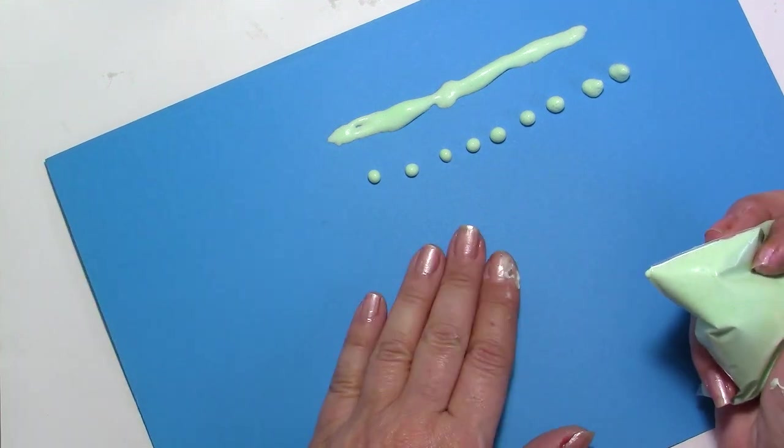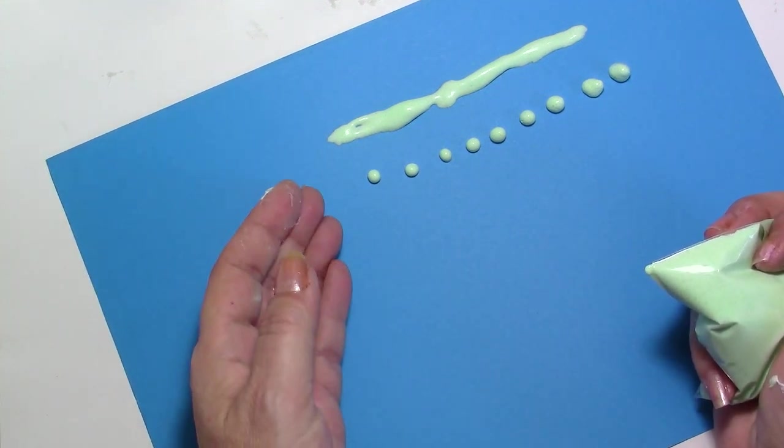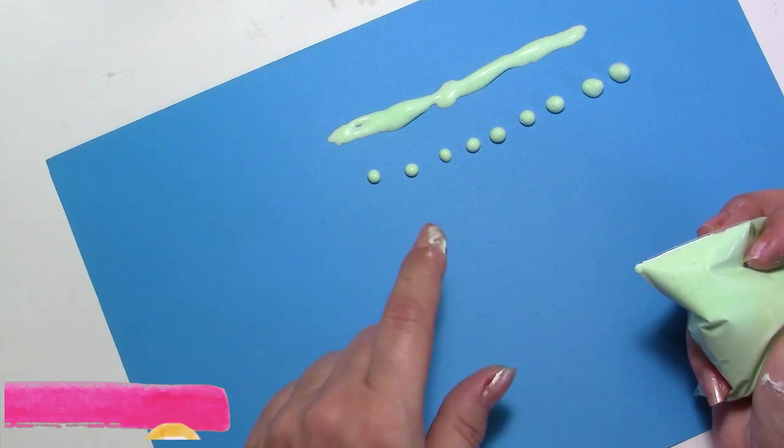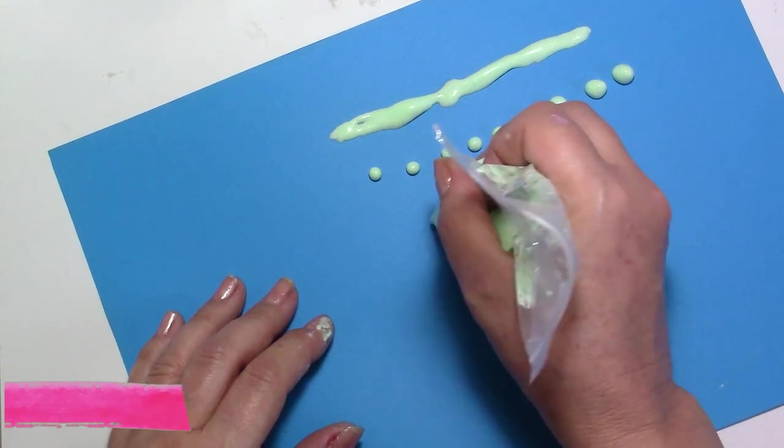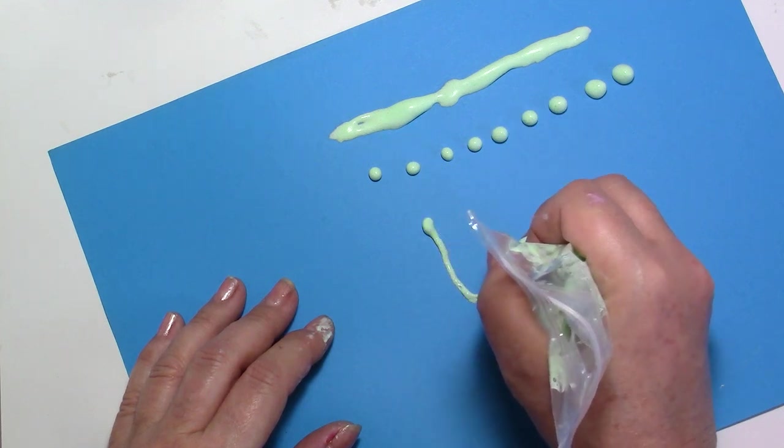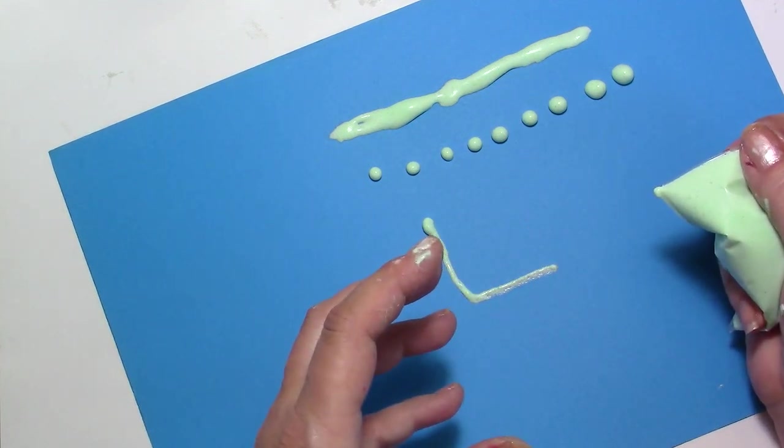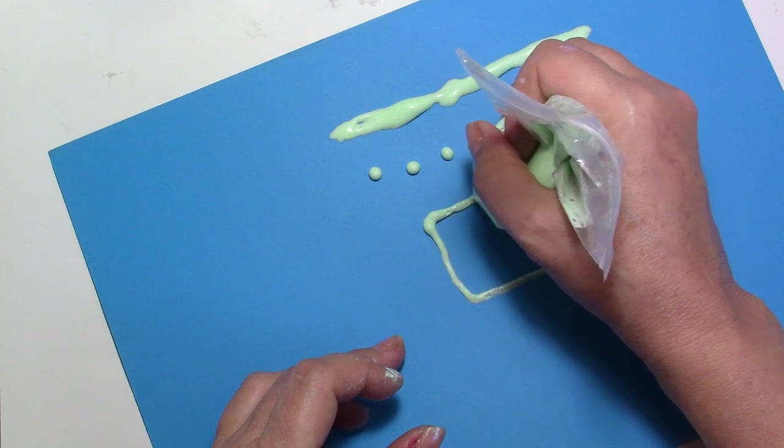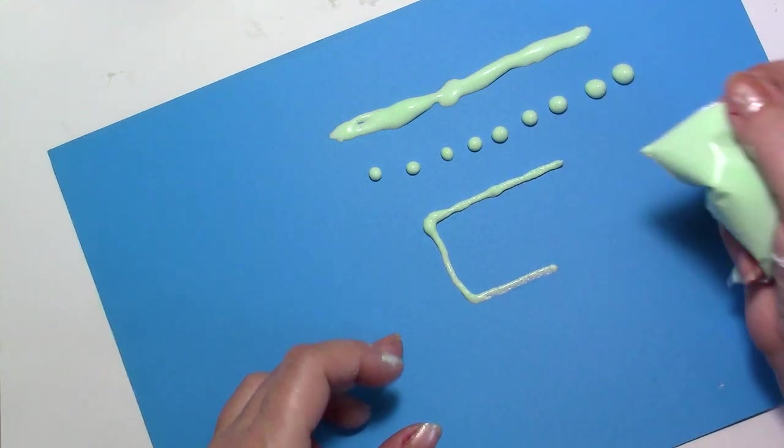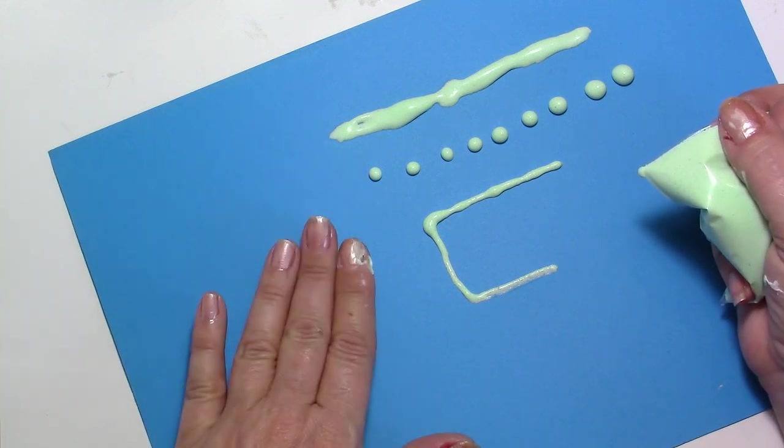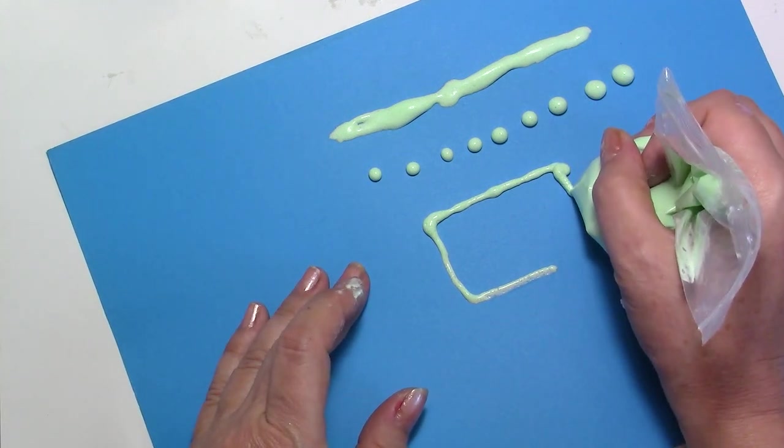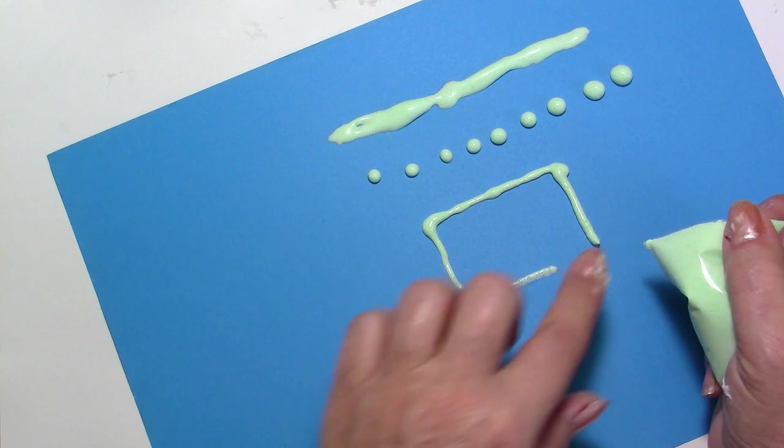If you do this on parchment paper, you will be able to peel them off. Here you will not because the glue is going to adhere to the paper. You can make a little house. If you want more dimension, don't press directly onto the paper. Stay kind of a few millimeters just over the paper, so you're going to leave a more rounded shape.